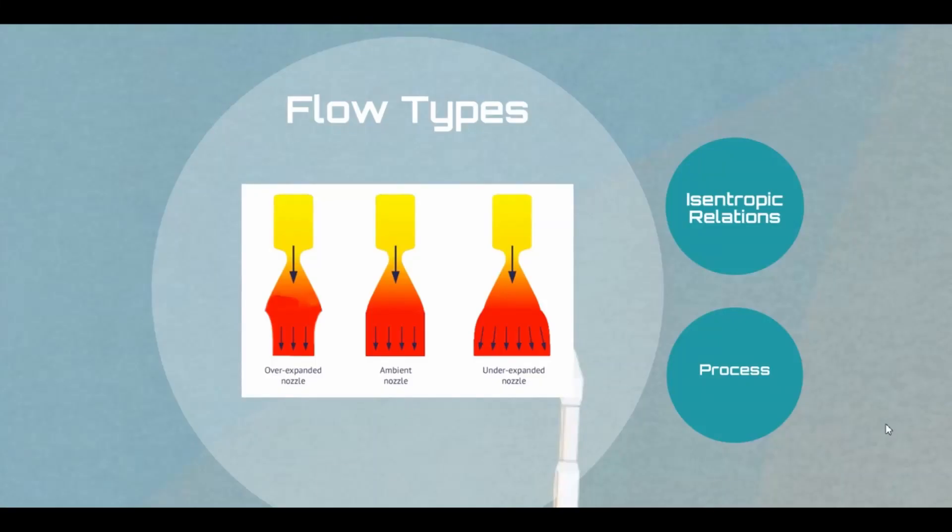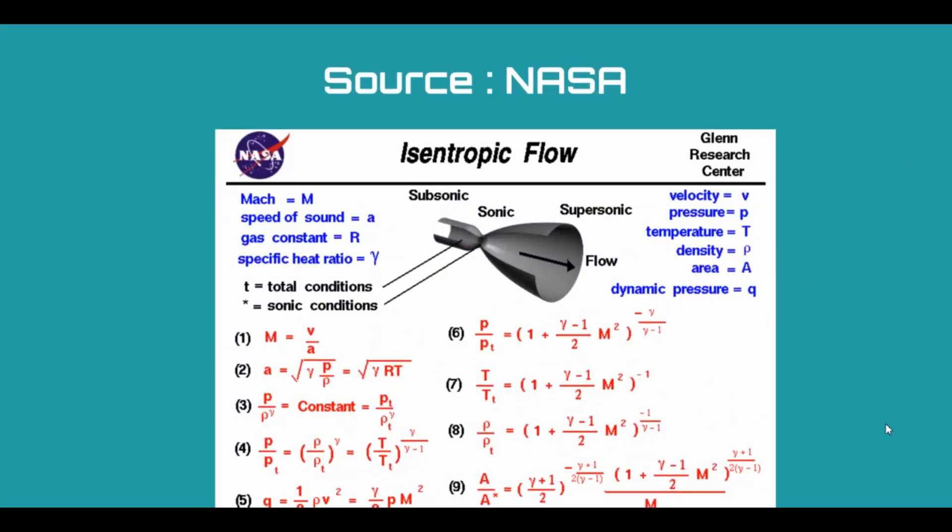Flow types - there are different types of flow which occur. Because the spacecraft propels from low altitude sea level to higher altitudes, it will undergo different changes. It may face overexpanded nozzle, underexpanded nozzle, and ambient nozzle. Based upon the pressure at exit and ambient pressure, we can achieve such types of nozzles.